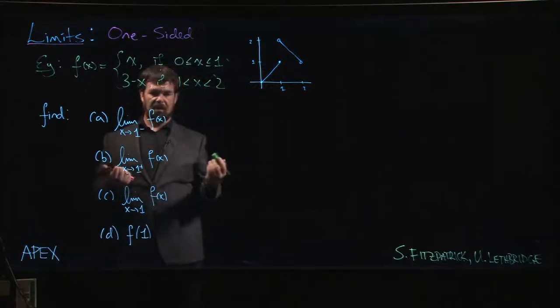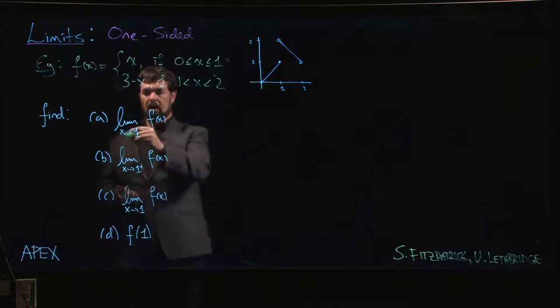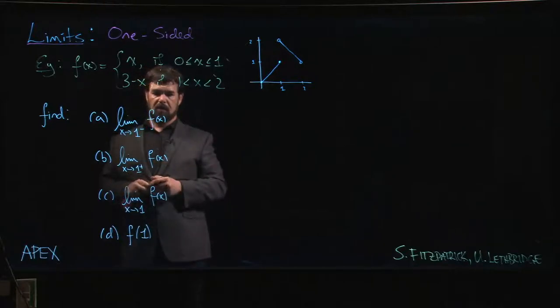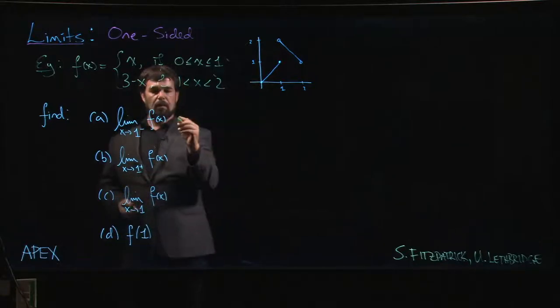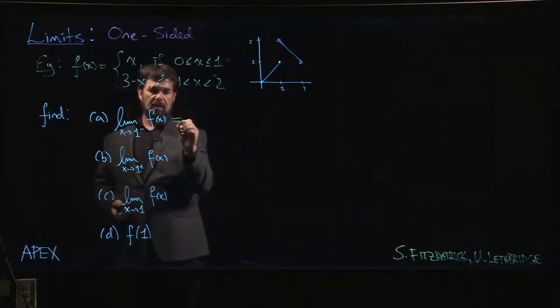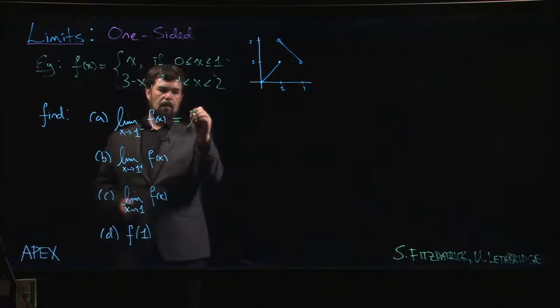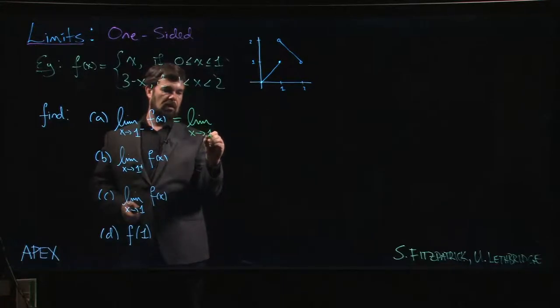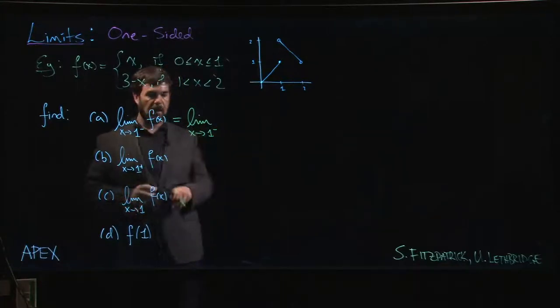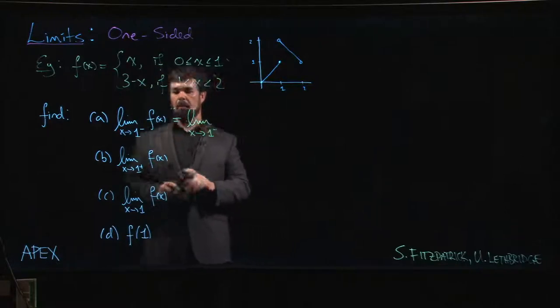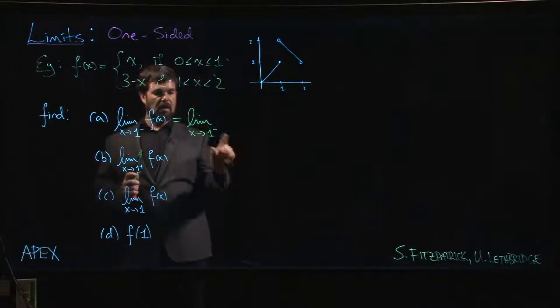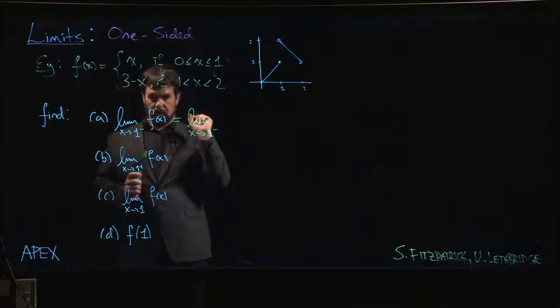So intuitively we know that the limit doesn't exist. Now with the language of one-sided limits we can say exactly that. So the limit as x approaches one from the left of f(x), we can see it from the graph. I think a good habit to get into here is replace f(x) by the expression in the piecewise function that applies in this case.